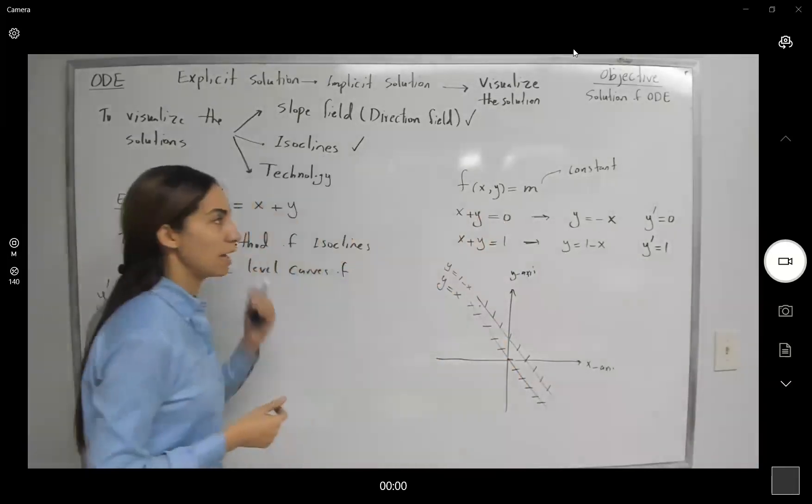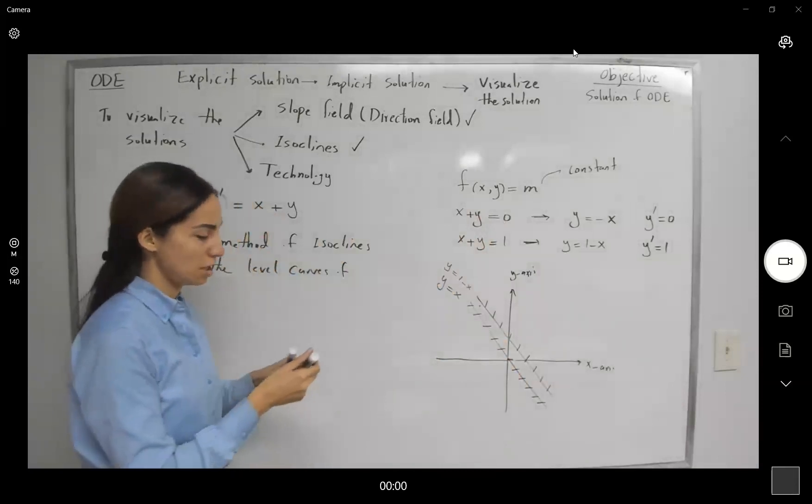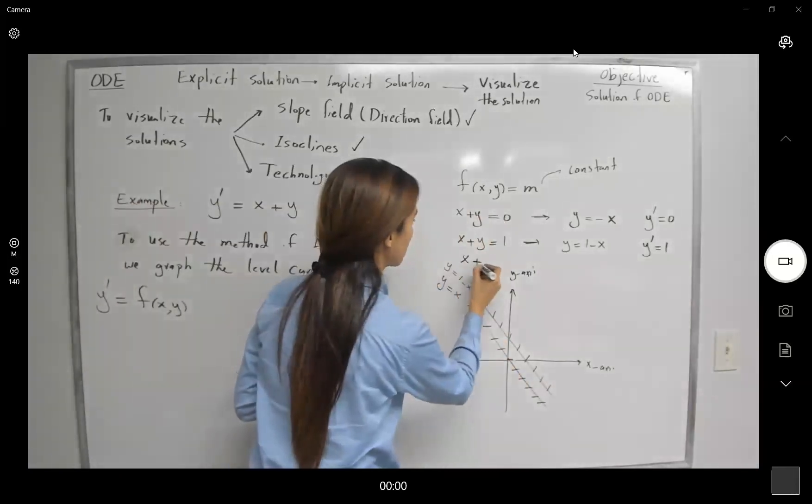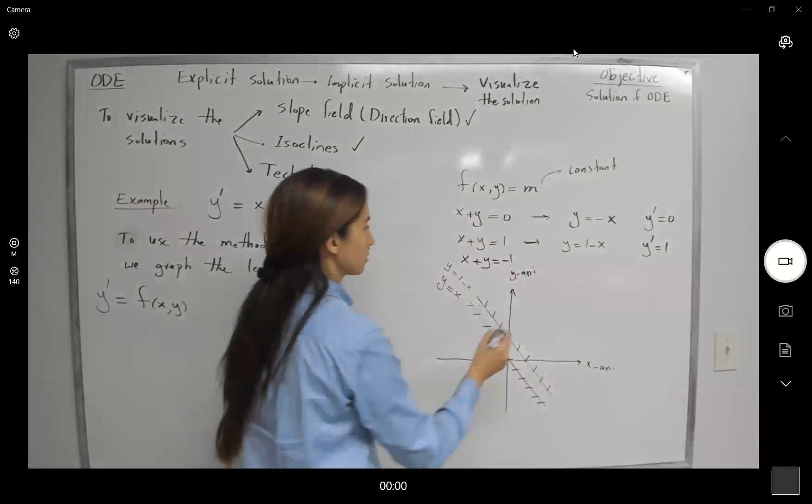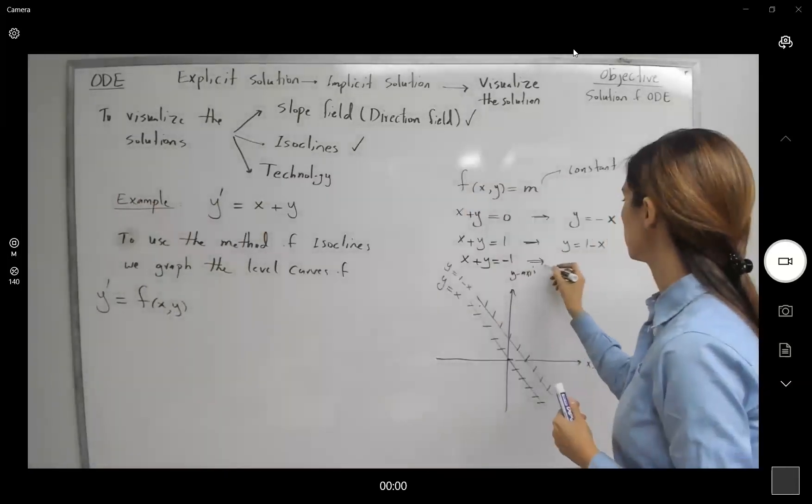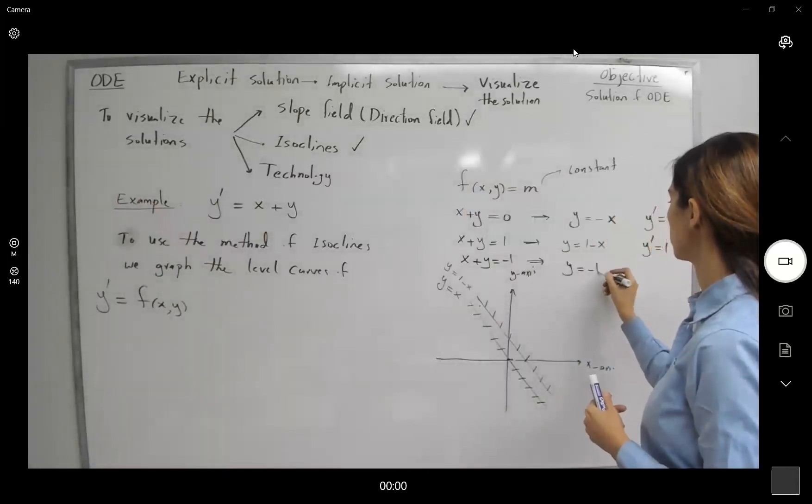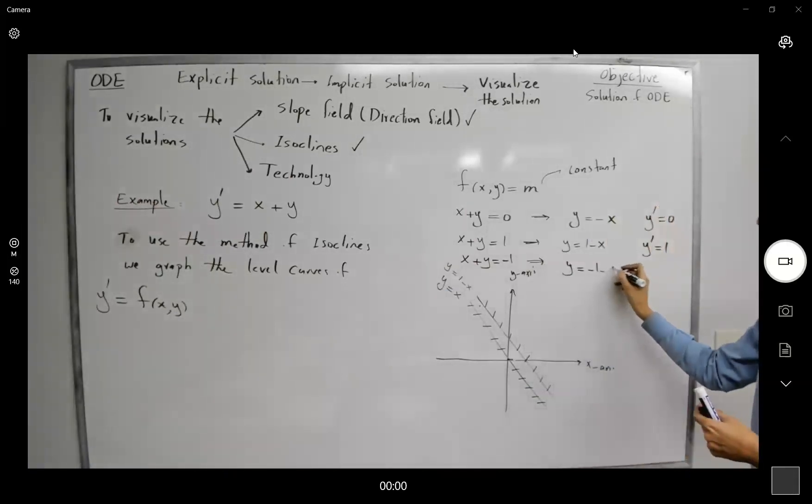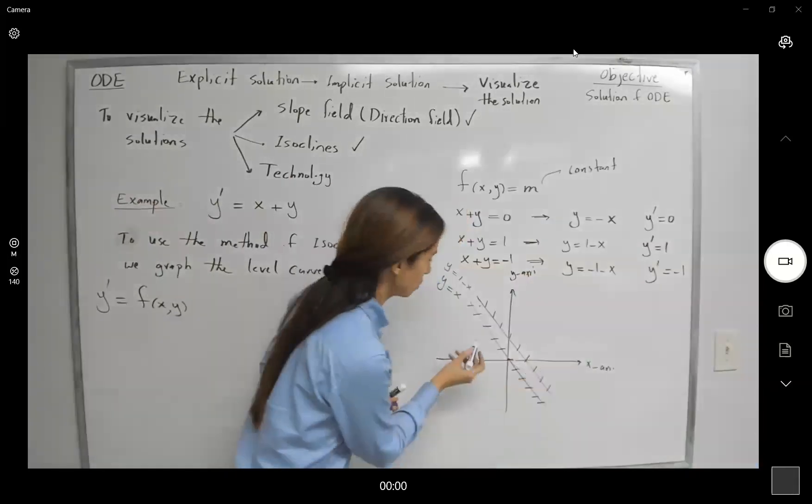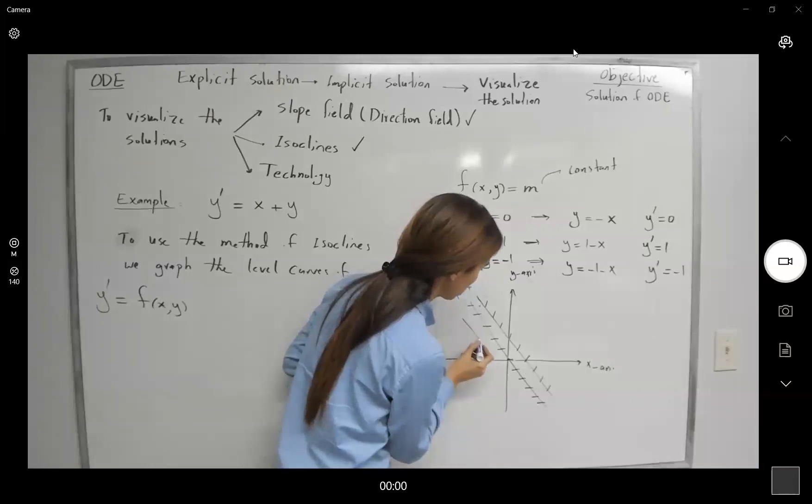You can plug in, for example, m to be negative 1 and you get x plus y equals to minus 1. So in this case, we get y equals to negative 1 minus x. And note that the derivative is equal to negative 1. Well, in this case, we have this line here. They are parallel lines.